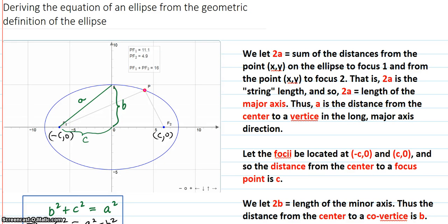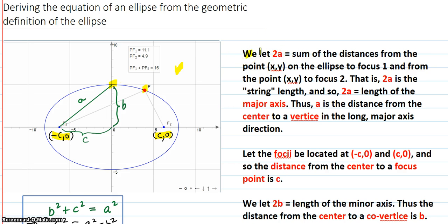We're deriving the equation of an ellipse from its geometric definition. Here's our picture with the foci labeled at negative c, 0 and c, 0. There's a point x, y on the ellipse, which can be moved to different positions. We let 2a be the sum of the distances from point x, y on the ellipse to focus one and from the point to focus two — that's the defining string length discussed in the other videos.